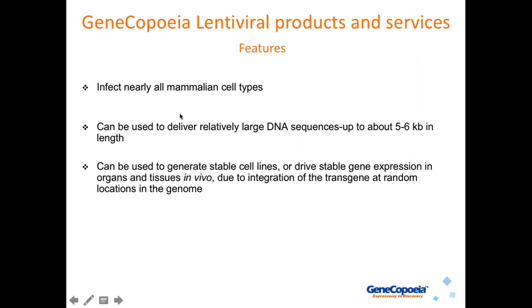These are the key features of GeneCopia's lentiviral products and services. They infect nearly all mammalian cell types thanks to replacement of the HIV ENV gene with VSVG. They can deliver relatively large sequences up to about five to six KB in length, although packaging efficiency decreases once the insert size starts to exceed four KB. They can be used to generate stable cell lines or drive stable gene expression in organs and tissues in vivo, due to integration of the transgene at random locations in the genome.